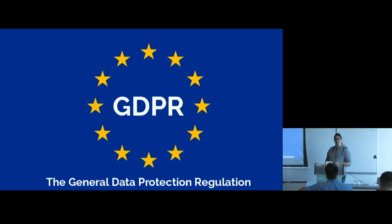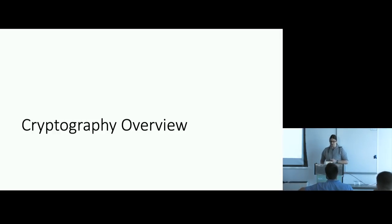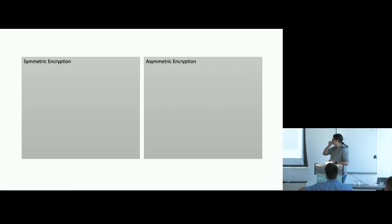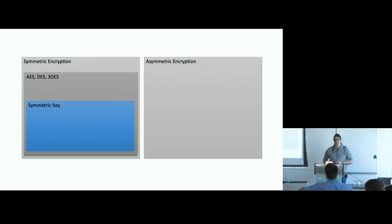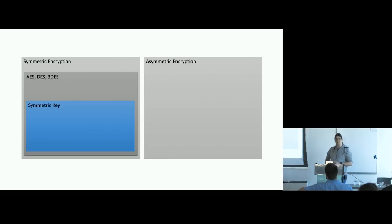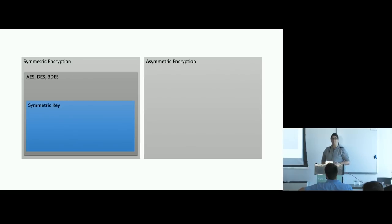I'm going to do a very high-level cryptography overview so everyone's on the same level playing field. Broadly, when it comes to encryption we have two types: symmetric and asymmetric. With symmetric encryption, we have things like AES — or if dealing with legacy systems, DES or Triple DES, though those aren't recommended for new systems. It's called symmetric because you have one key used to both encrypt and decrypt information.